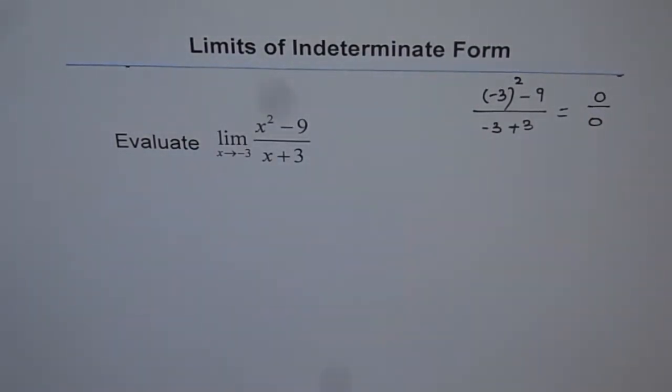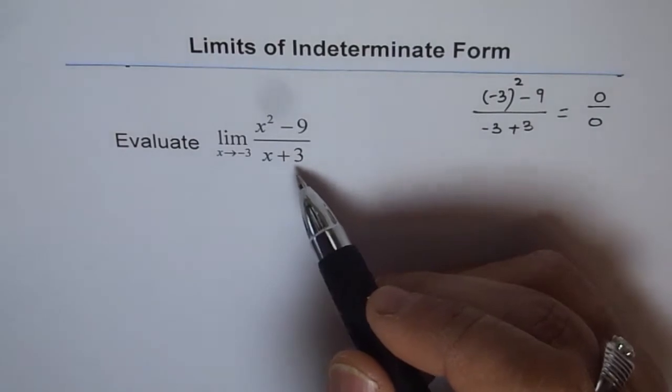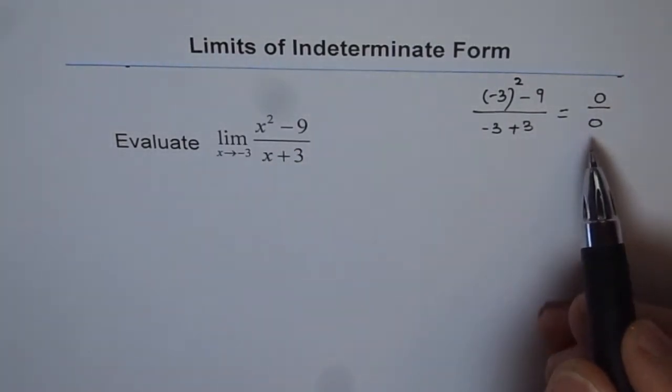So what do we see? We see a quotient, when you divide something by something. And when we substitute the limiting value in it, we get 0 over 0. So that is a case of indeterminate form.